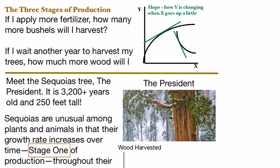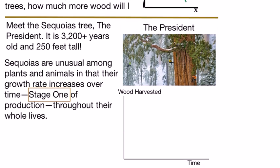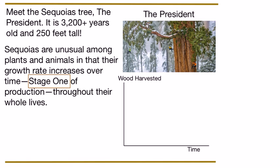How an input increases or changes output in a production process can exhibit three patterns, which is why this video covers the three stages of production. For stage one, consider a very special tree called 'The President' — one of the largest trees in the world, over 3,200 years old, which means it was a sapling before Rome even existed, and it's over 250 feet tall.